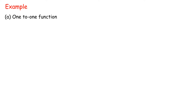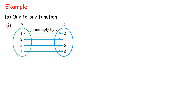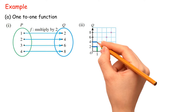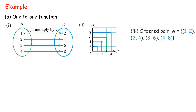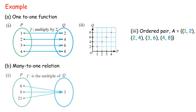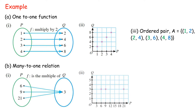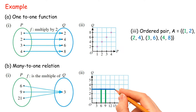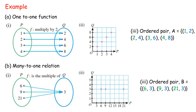Example A — One-to-one function: A relation where each object in the domain has only one image. Ordered pair A equals {(1,2), (2,4), (3,6), (4,8)}. Example B — Many-to-one relation: A relation where more than one object is matched to the same image. Ordered pair B equals {(6,3), (9,3), (21,3)}.